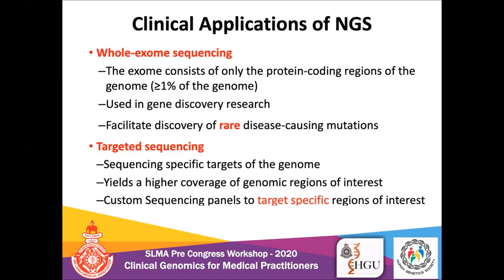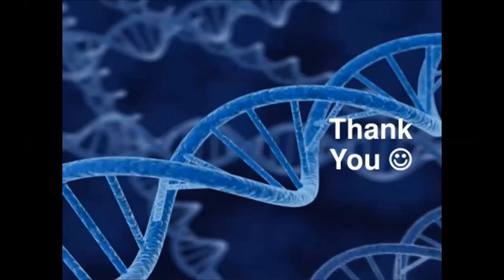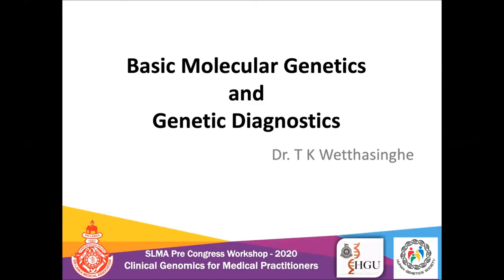Exome sequencing, or whole exome sequencing, consists of sequencing the exome — only the protein-coding regions of the genome, which represent about 2% of the whole genome. This is used to recover genes in research and facilitate discovery of rare disease-causing mutations. Targeted sequencing is a specific sequencing method that targets specific regions of the genome, providing higher coverage of regions of interest; custom sequencing panels can be developed to target specific genomic regions. Thank you for attending the presentation.